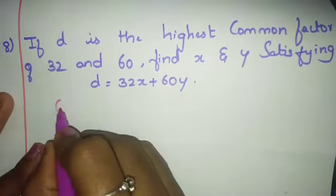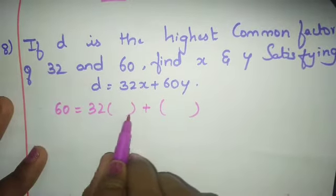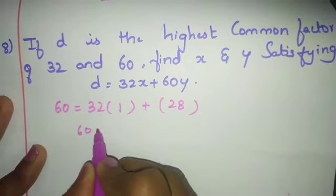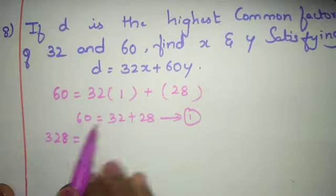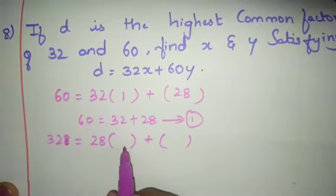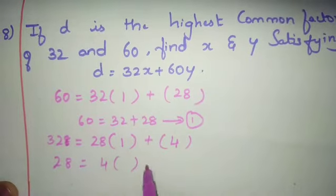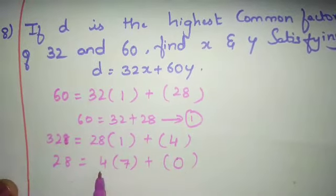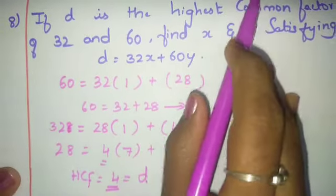Apply Euclid's division lemma: 60 = 32 × 1 + 28. That is equation 1. Then 32 = 28 × 1 + 4. Then 28 = 4 × 7 + 0. 4 × 7 is 28, so remainder is 0. Therefore HCF, which is d, equals 4.